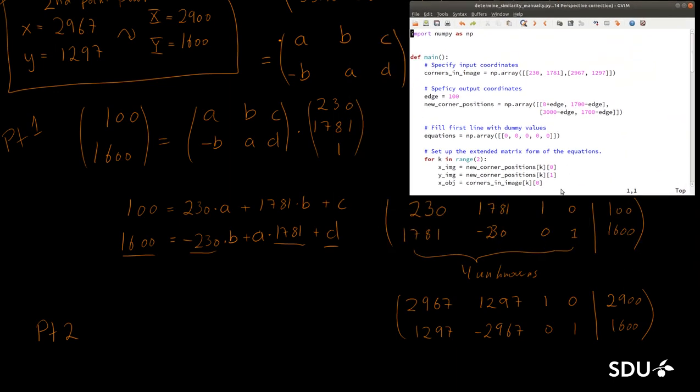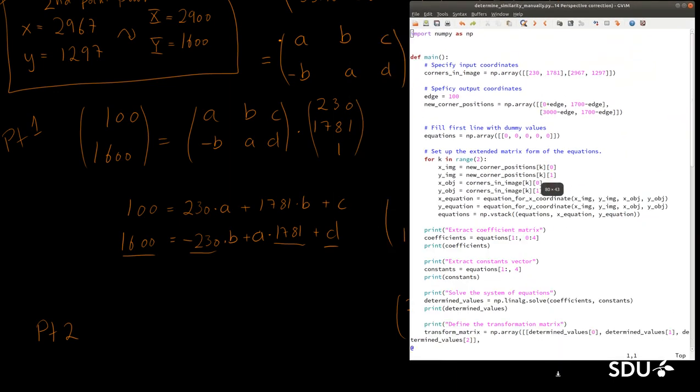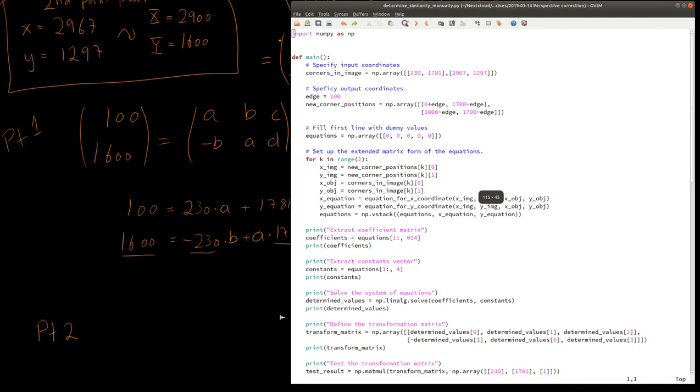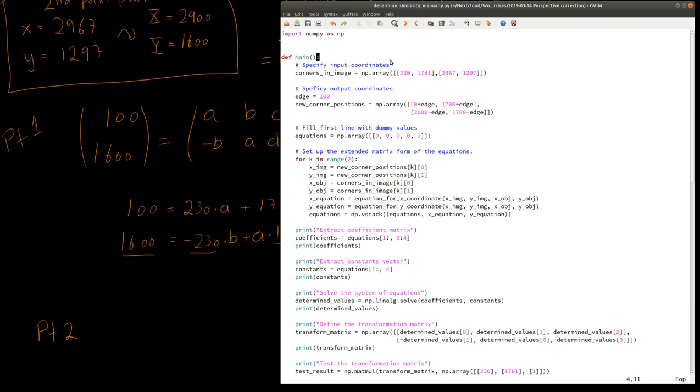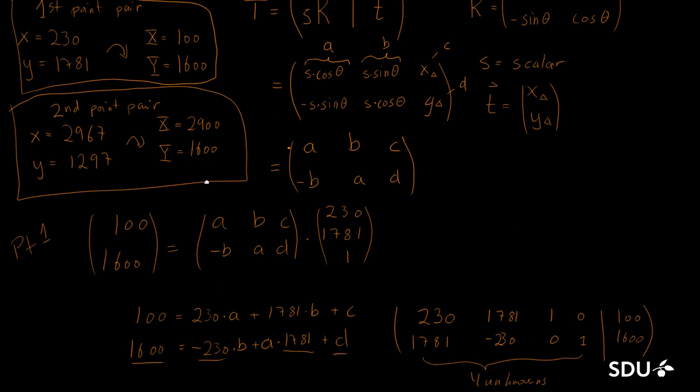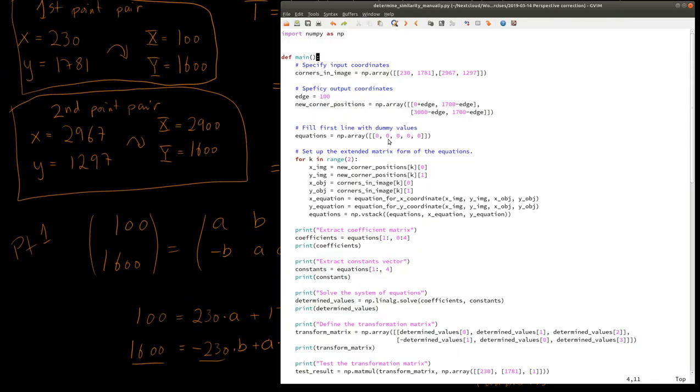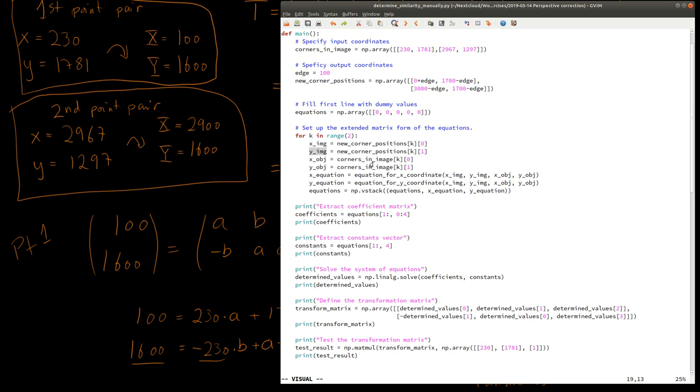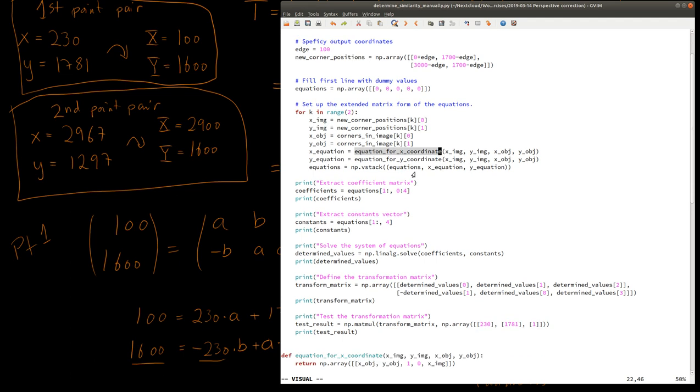The program is given here. It's written in Python using the NumPy toolbox or package. What happens is we have the main function where we specify our input coordinates. So we have the original coordinates that were specified here in the video, and we also have the new positions. Then to set up the equations, I pull out the image and object coordinates from these values here and insert them to this equation for the x coordinate and for the y coordinate. When that's done, I show the coefficients we have extracted.